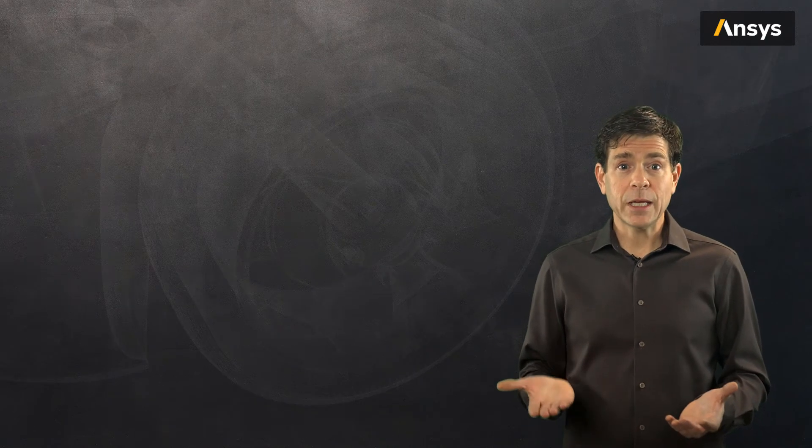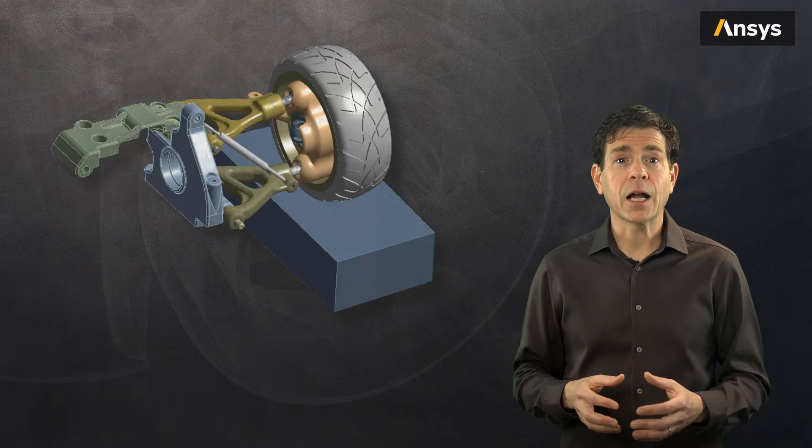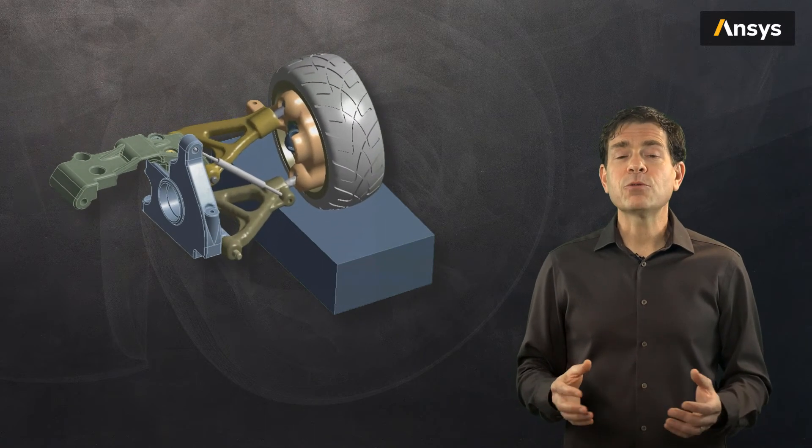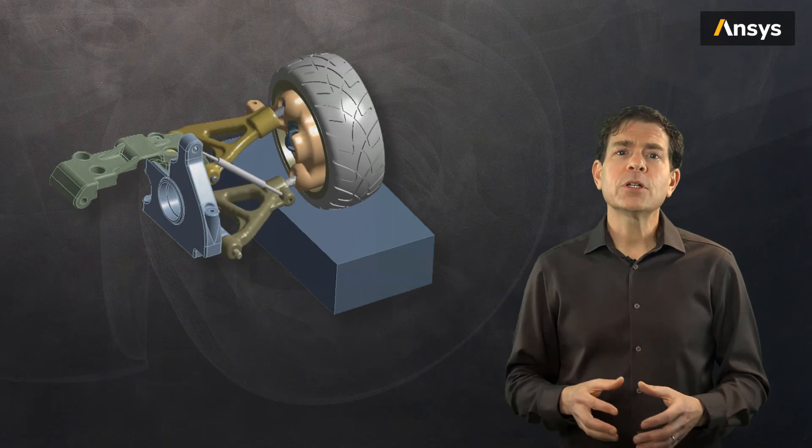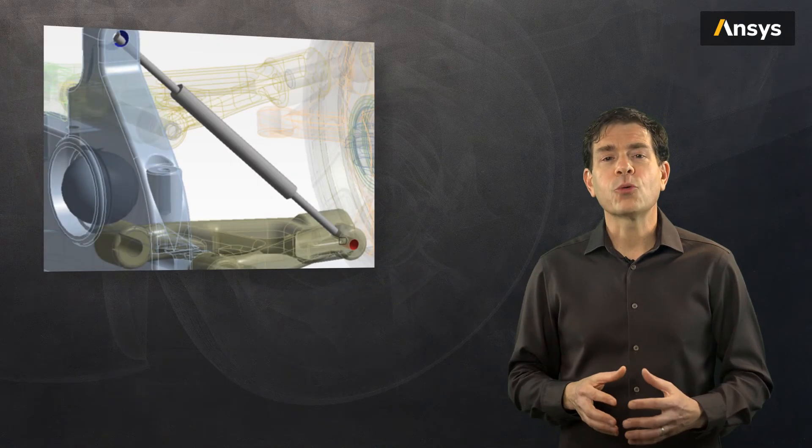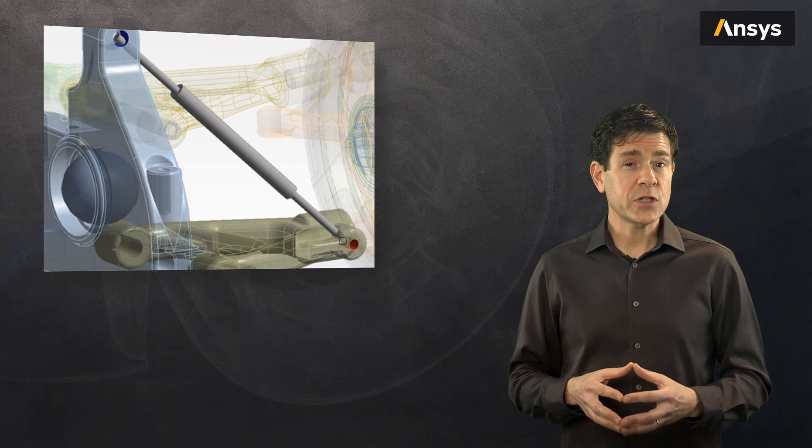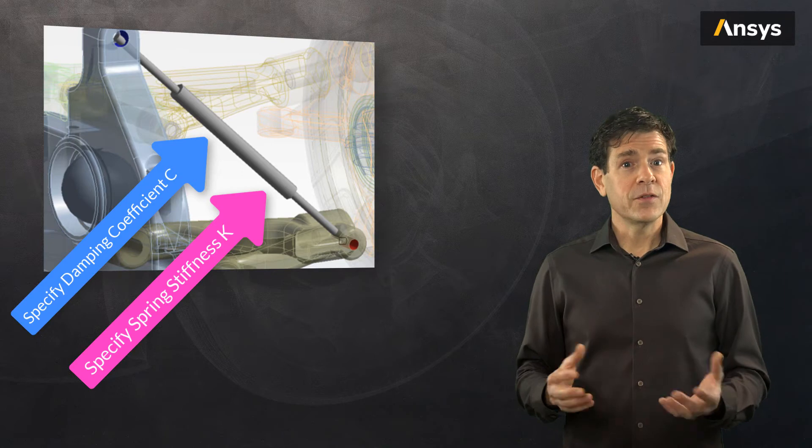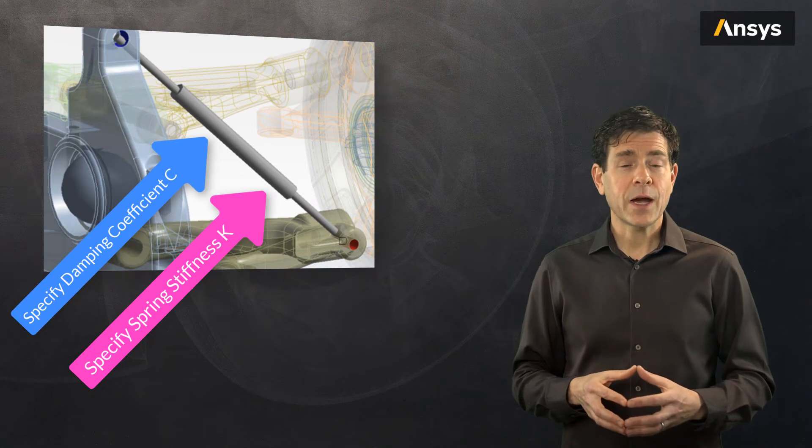A rigid block is used to simulate a bump in the road by thrusting the block up and down over a short time duration. The suspension then reacts to the bump and we will look at the response of the system. For the shock absorber, we can directly specify the damping coefficient C as well as the spring stiffness K. The value of these could be measured and specified in the simulation.